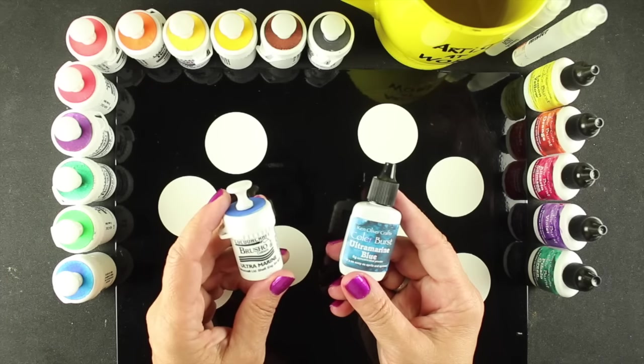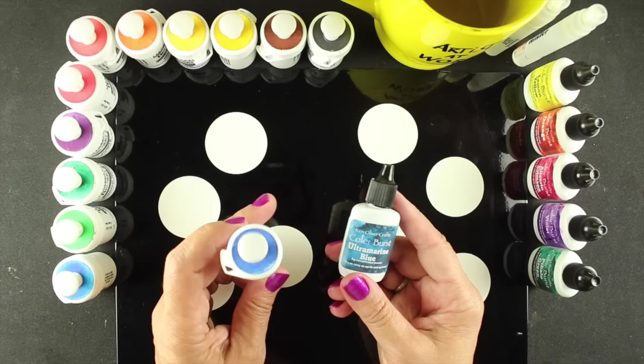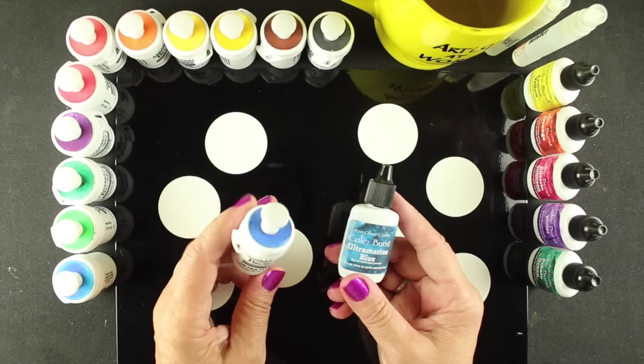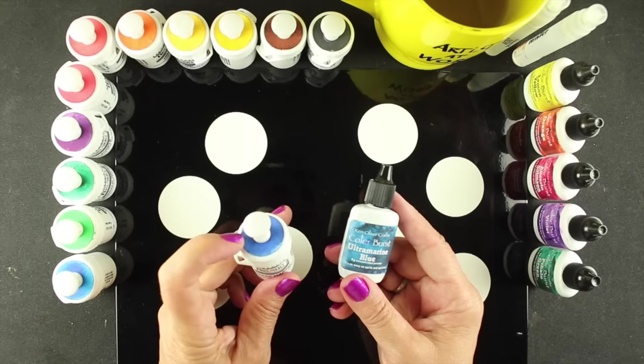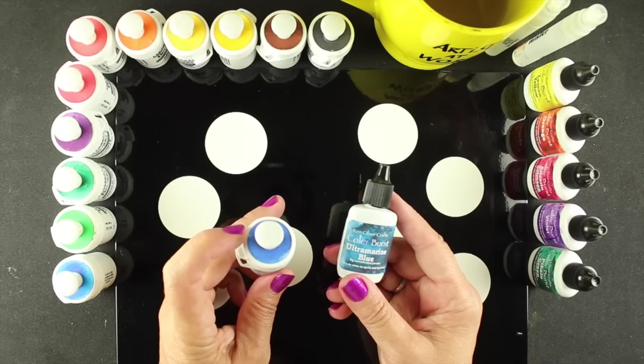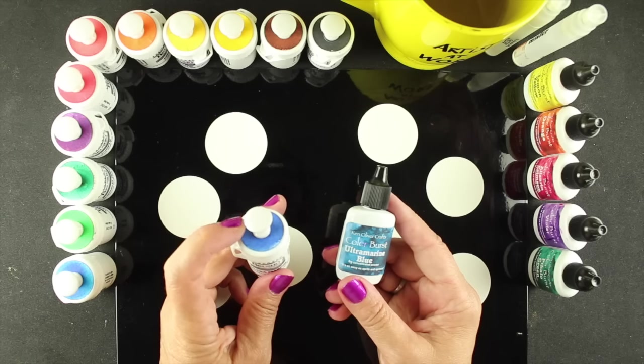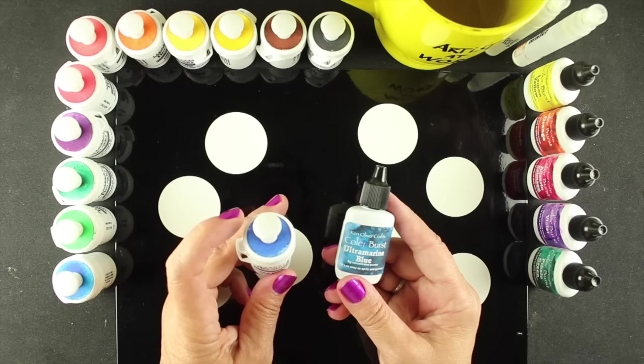On the right is the Colorburst by Ken Oliver. Those come in a squeeze bottle, so they just come out on their own, and they're only available in six colors, but they are made in the USA. They're in eight gram bottles, so they're a little over half the size of the Brusho, just for comparison.